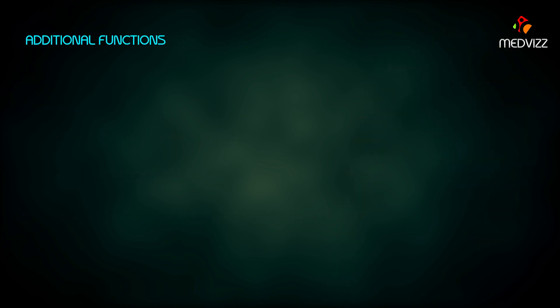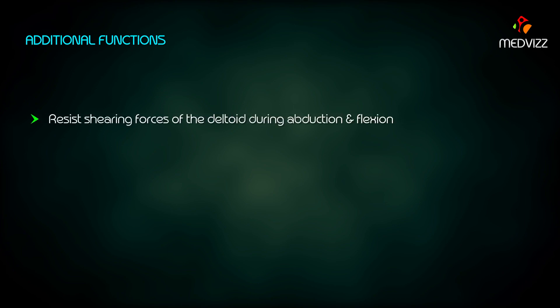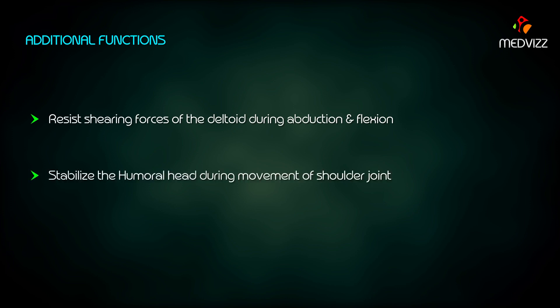Additional functions of the rotator cuff muscles include: they resist shearing forces of the deltoid during abduction and flexion, and they stabilize the humeral head during movement of the shoulder joint.